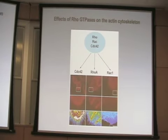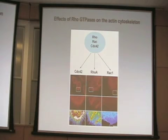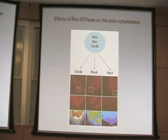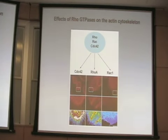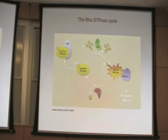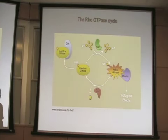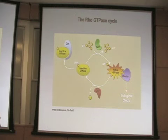Besides actin polymerization, Rho-GTPases also play an essential role during cell migration. There are primarily three major GTPases: Cdc42, RhoA, and Rac1, involved in the formation of specific actin-containing structures. Cdc42 is responsible for filopodia formation, RhoA for stress fibers and focal adhesions, and Rac1 is involved in the formation of lamellipodia. All these Rho-GTPases cycle between an active GTP-bound state and an inactive state.